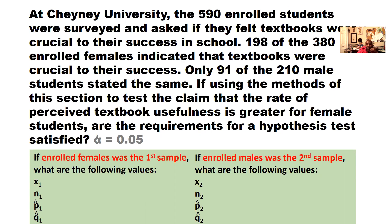At Cheney University, the 590 enrolled students were surveyed and asked if they felt textbooks were crucial to their success in school. 198 of the 380 enrolled females indicated that textbooks were crucial to their success. Only 91 of the 210 male students stated the same. If using the methods of this section to test a claim that the rate of perceived textbook usefulness is greater for female students, are the requirements of a hypothesis test satisfied? Then we're going to calculate and solve this problem like we've done before.